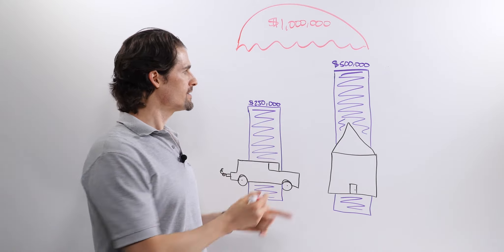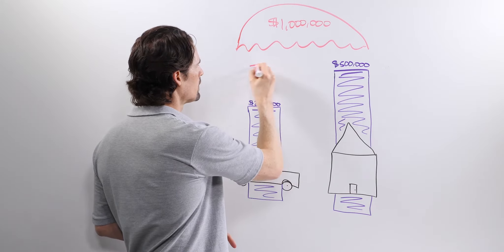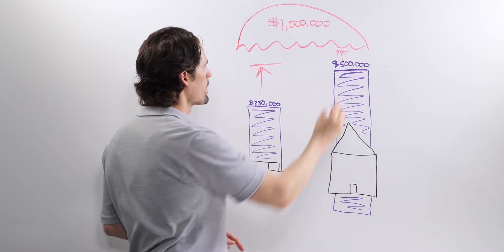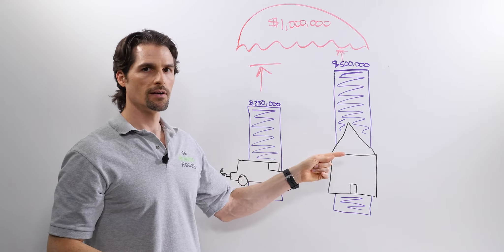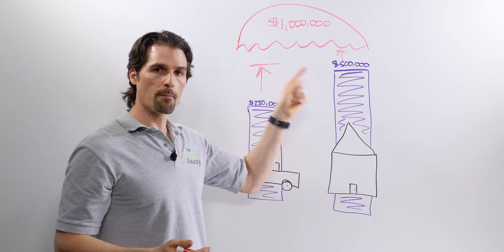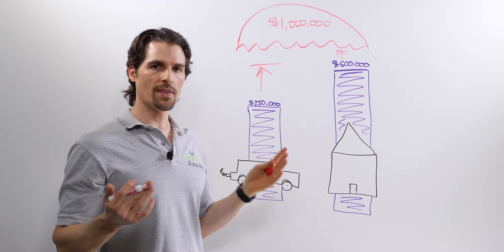The nice thing is if you get sued for more than what your auto limit is or your homeowner limit, that's cool. It's all right because your umbrella policy picks up the difference.